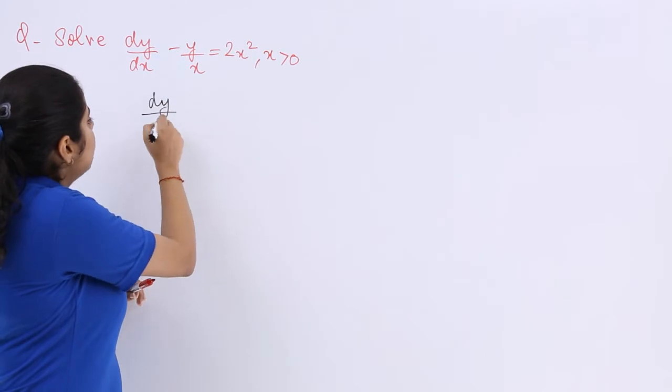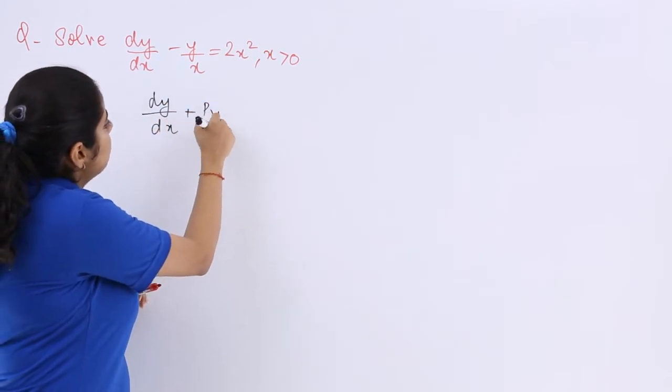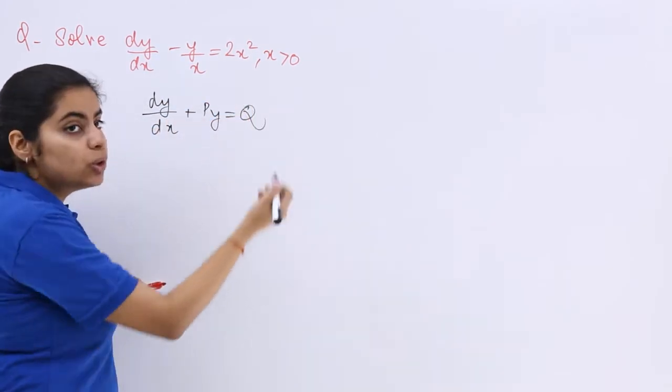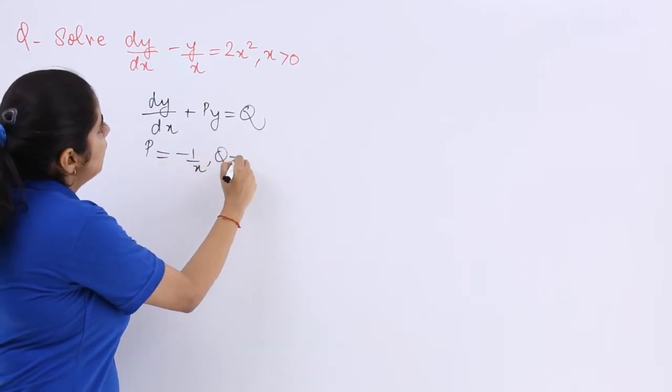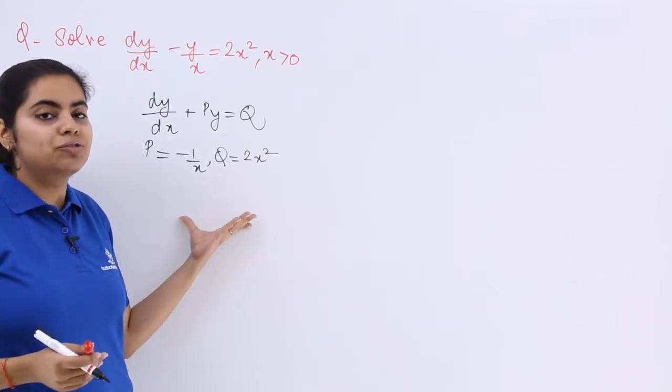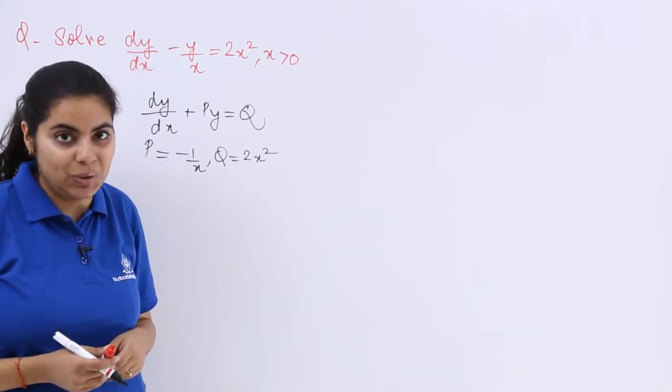It is dy/dx + py = q where my p = -1/x, where my q = 2x², and both these are the functions of x so there is no problem at all.